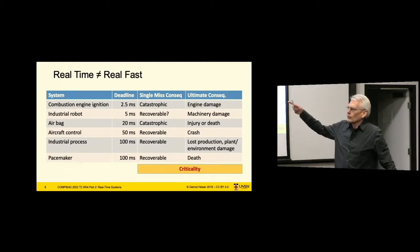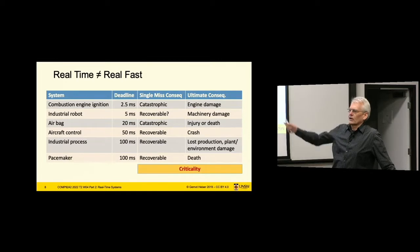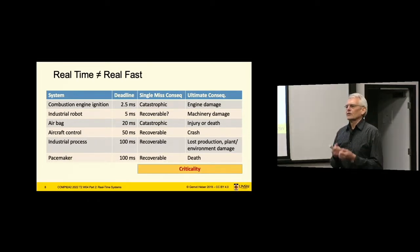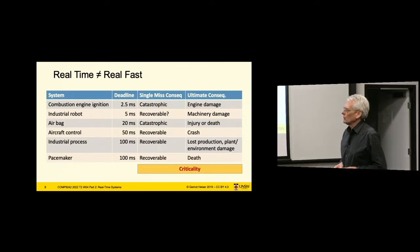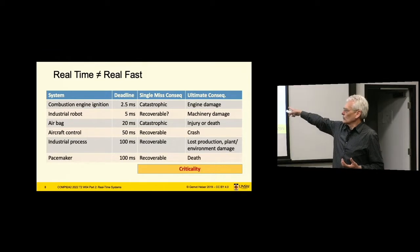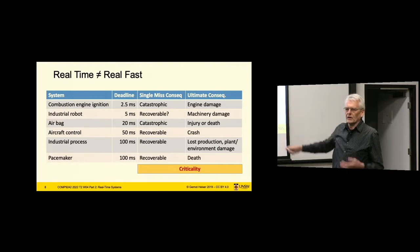There's the issue of what happens if we miss a deadline. Single-miss consequences range between catastrophic and recoverable. For example, a pacemaker — if it misses one beat once a day, you won't even notice it; that's completely recoverable. Whereas an airbag, if it doesn't go off when it's supposed to, that's truly catastrophic. Combustion engine ignition misfires can destroy the engine. Single misses may be recoverable, but multiple misses are not. If the pacemaker misses all its deadlines in a row, the patient dies. Similarly with aircraft: if it keeps missing deadlines, we have a crash. These things are expressed as criticality — the consequence of failure.